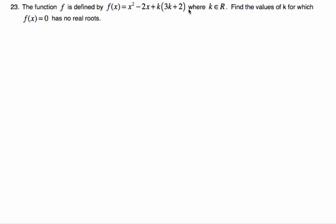Okay, so I have this function defined with terms of k, and it's going to be a real number, and I want the values for which there are no real roots. So, if there's no real roots, that means the discriminant, b squared minus 4ac, has to be negative.